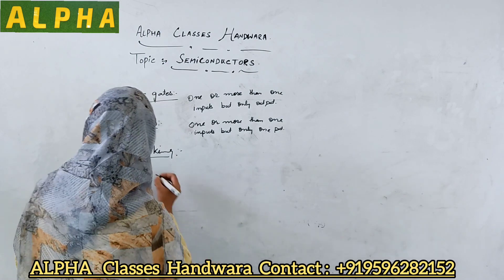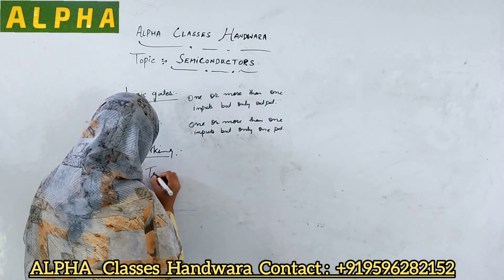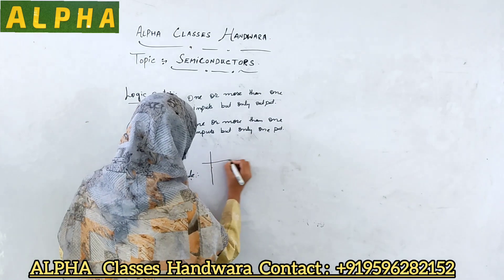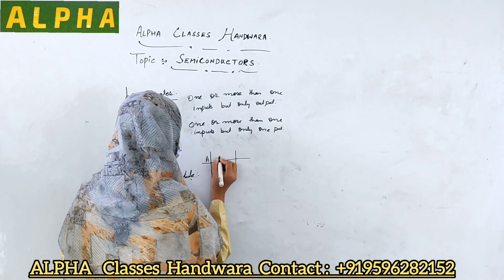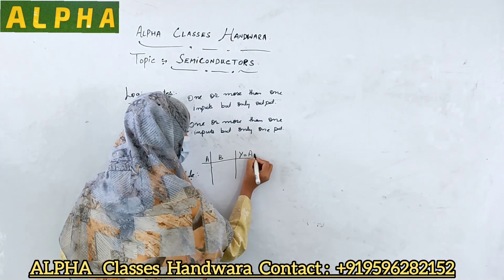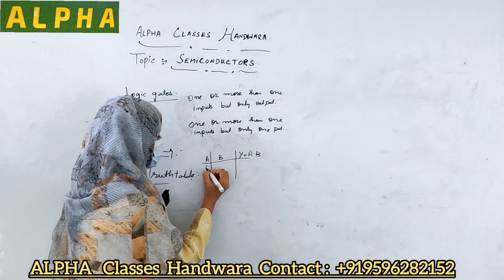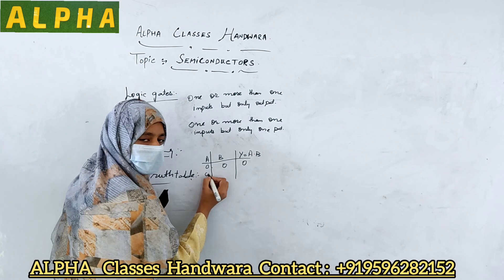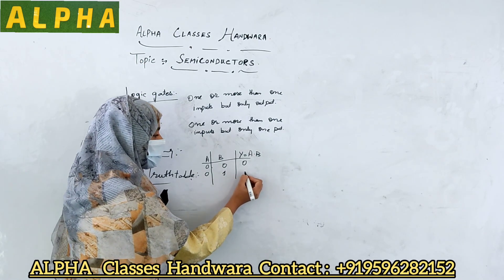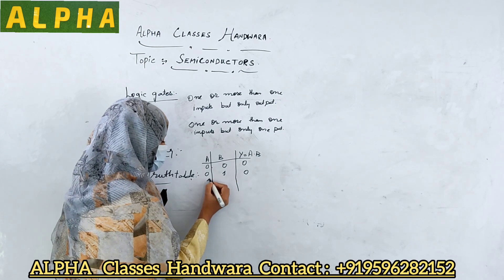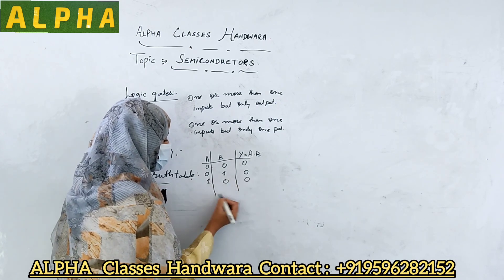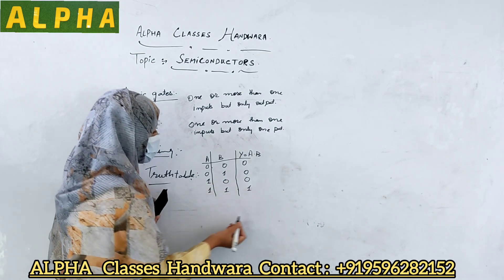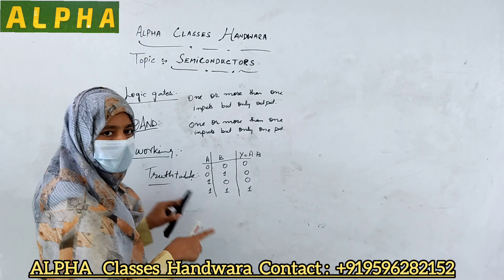Let us see the truth table for the AND gate. If one input is zero and another input is also zero, output will be zero, that is low. If one input is zero and another input is one, output will be zero, that is low. If both the inputs are high, that is one, output will be high, that is one. This was the truth table and working of the AND gate.